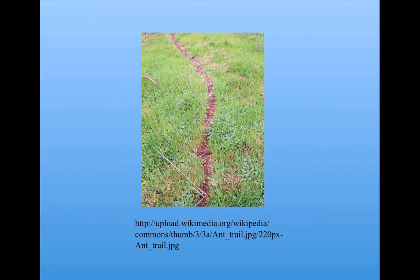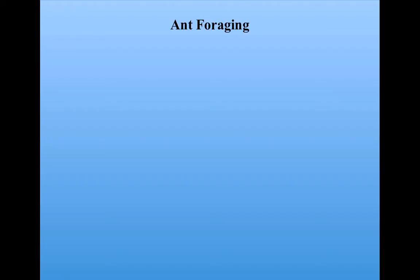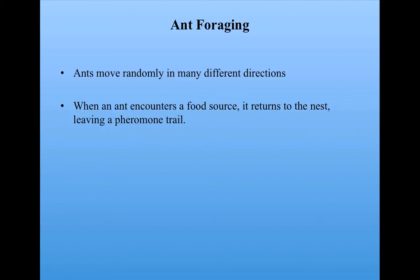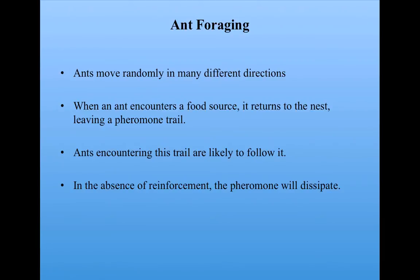We talked about this a little bit in Unit 1, and we're going to revisit it here in this unit along with some other amazing behaviors of ant colonies. The basic idea of ant foraging is that ants come out of a nest and move around randomly in different directions. When an ant encounters a food source, it brings some food back to the nest, leaving a pheromone trail — pheromone being a kind of chemical excreted by the ant that attracts other ants. Ants encountering the trail are likely to follow it, and in the absence of reinforcement, the pheromone will dissipate. But as long as ants continue to follow the trail and find food, they'll continue to reinforce it.